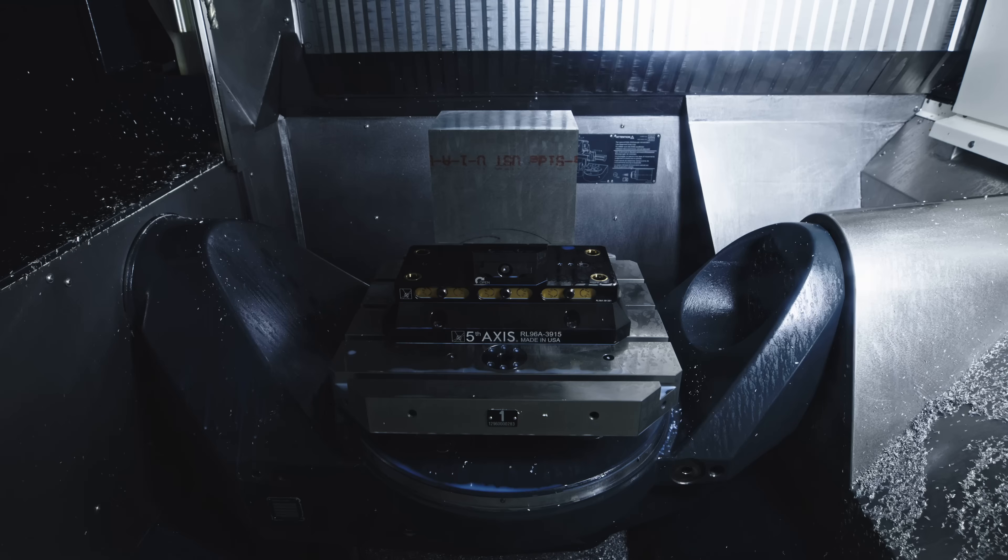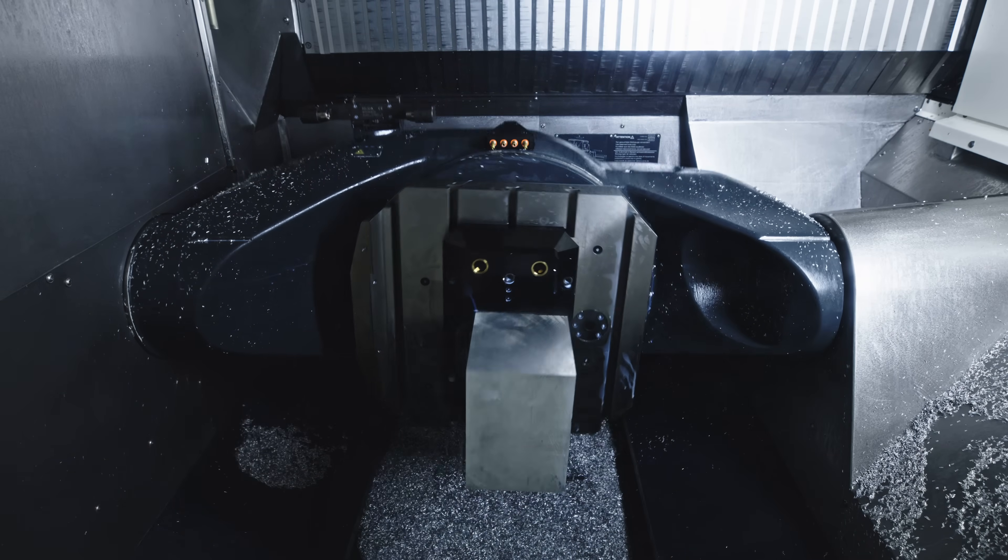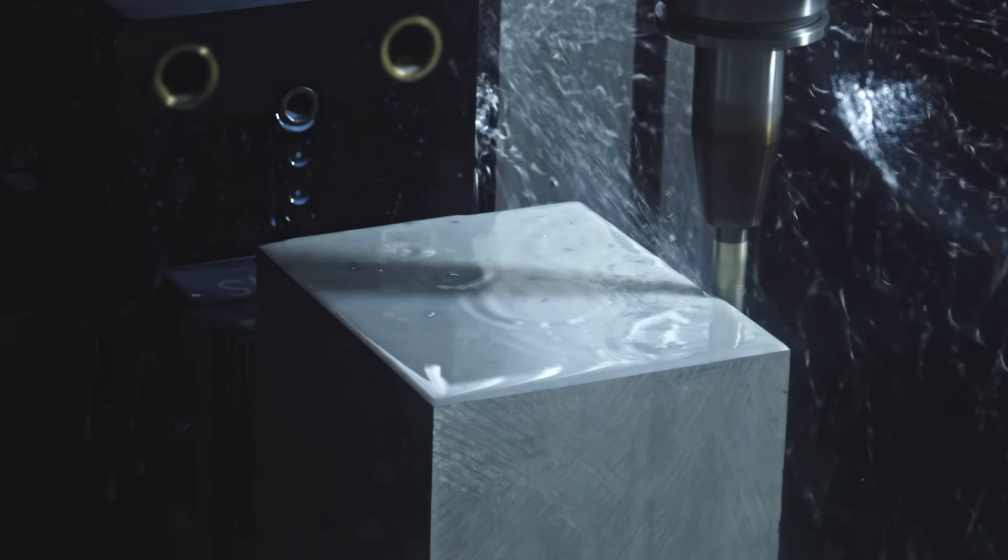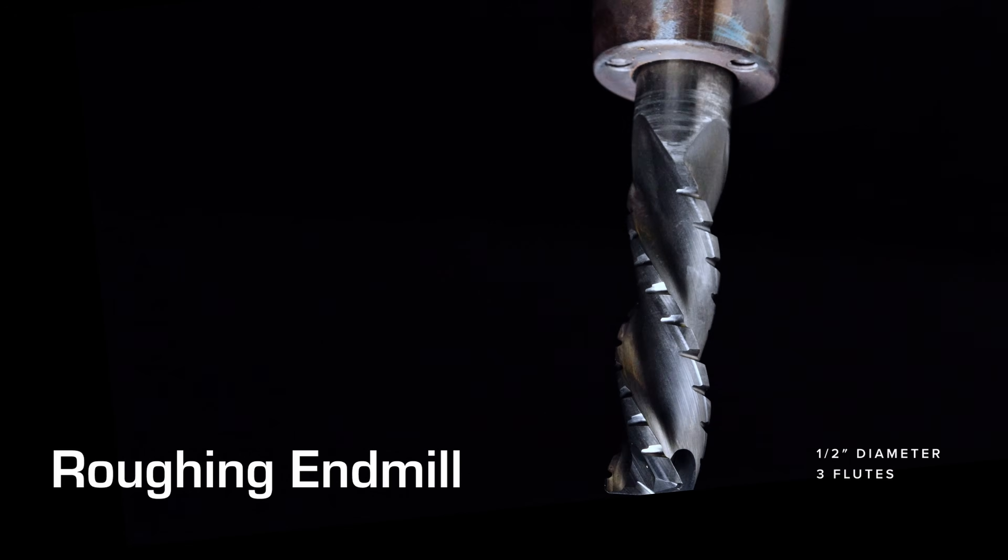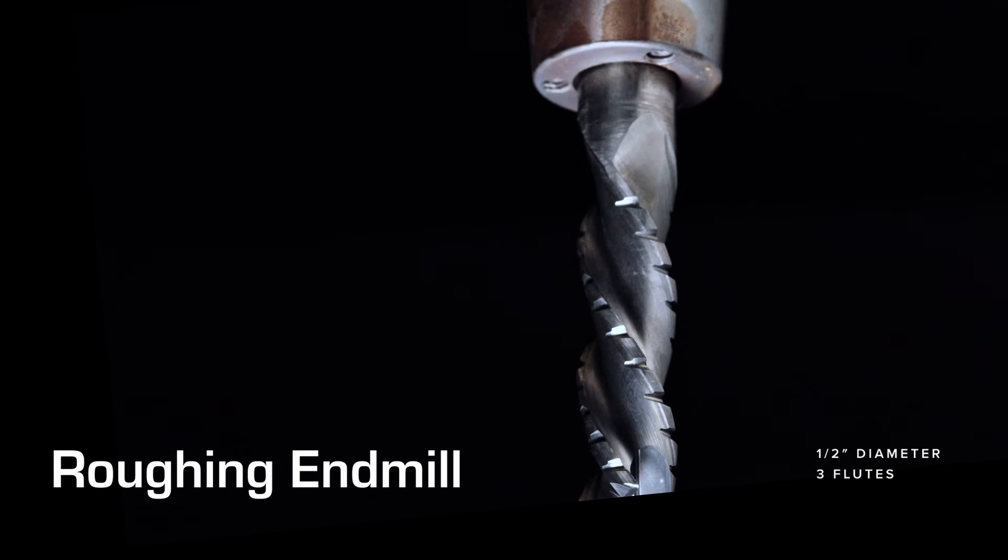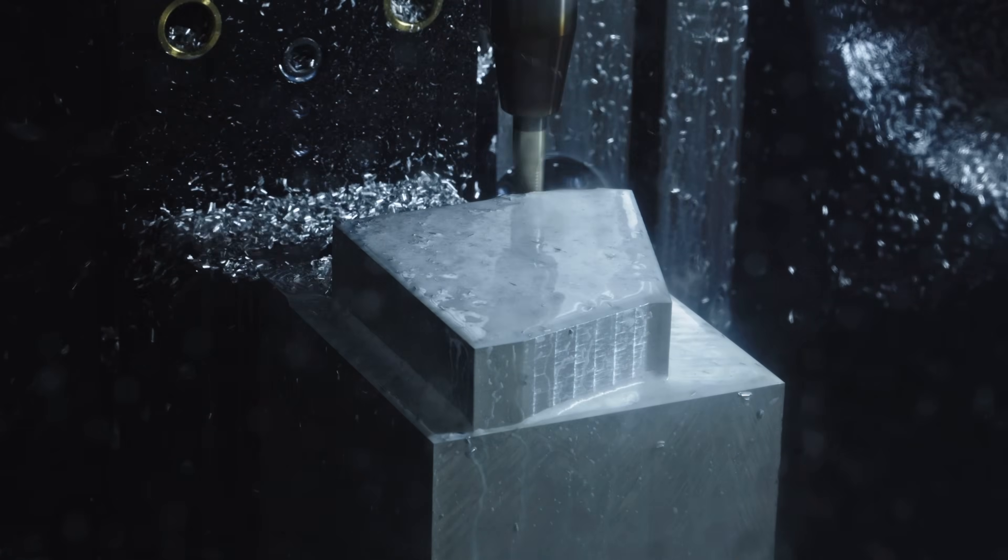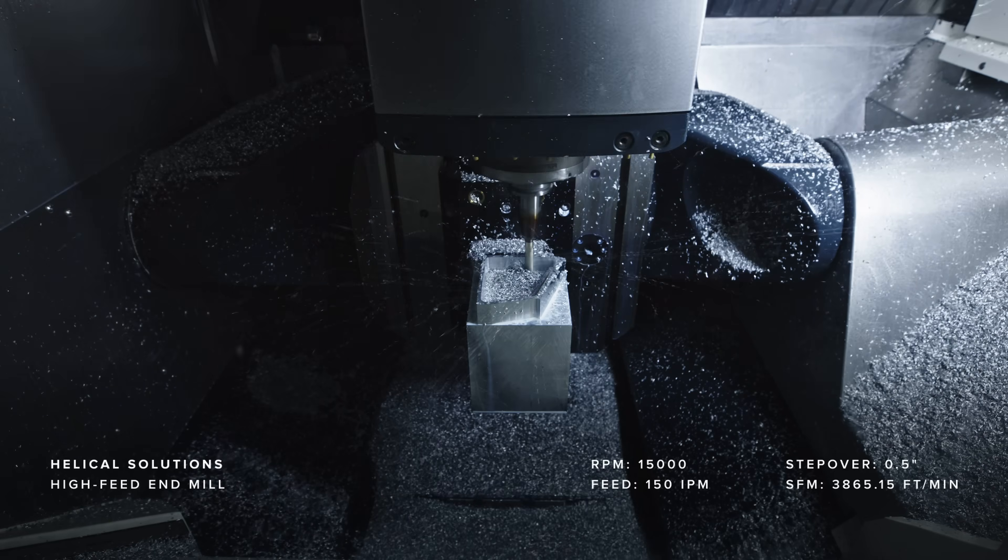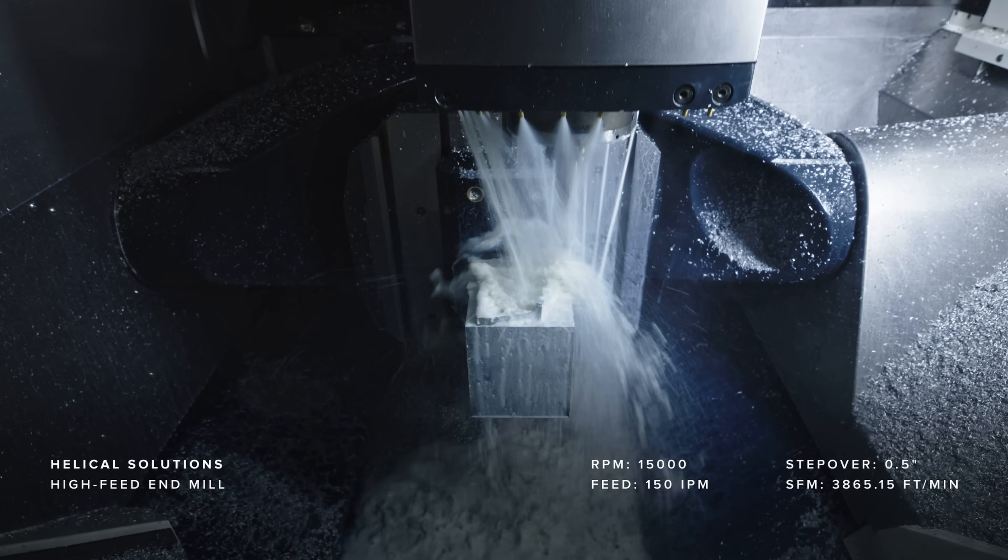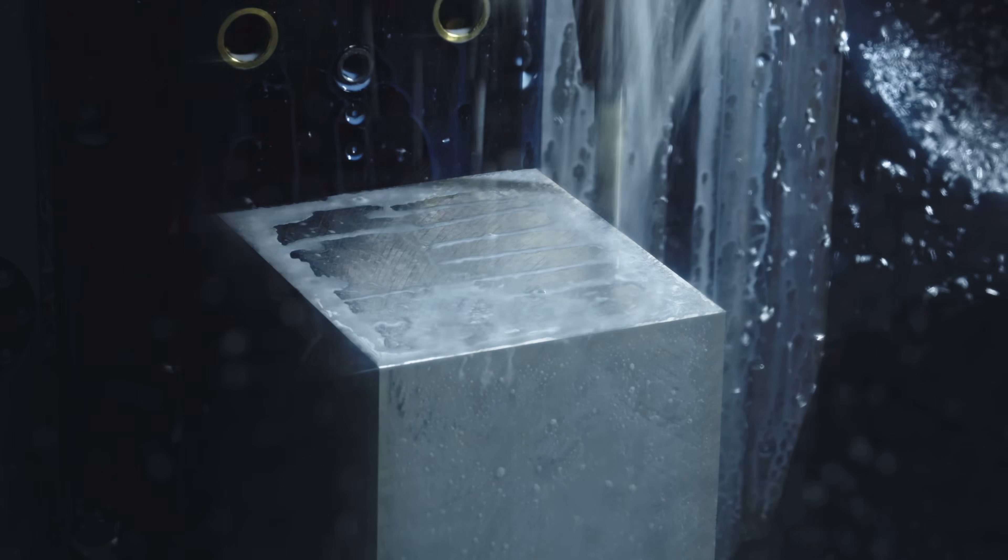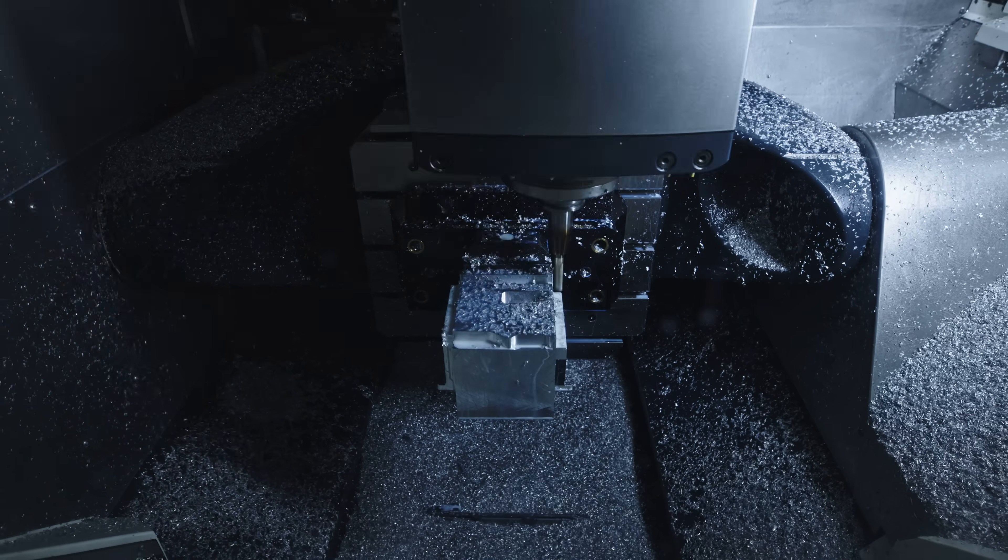To begin roughing, we rotate the table 90 degrees and start machining the outside of the part. For these cuts, we're using a half-inch roughing end mill from Helical, running at full depth of cut at 2 and 3 quarters with an 80 thousandths of an inch step over. Since we're removing a lot of material on this part, I chose to use an end mill instead of a shell mill to improve chip evacuation.